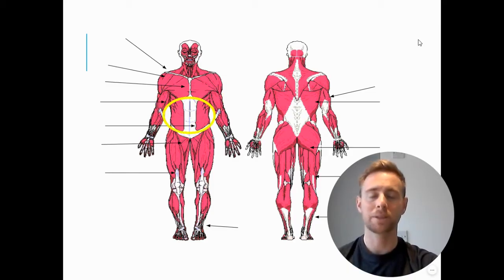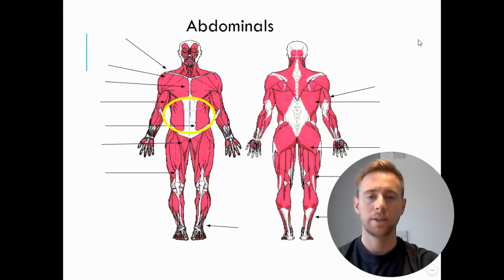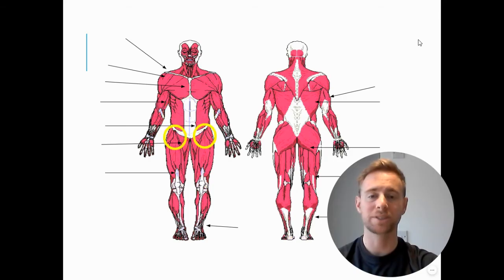We then have the main muscle in our stomach which is known as the abdominals. Then in the top of our leg between our abdominals and where our thigh would start, we have the hip flexors.